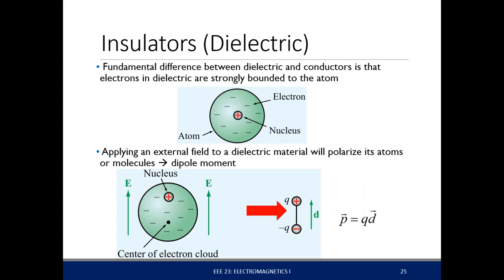The general structure of an atom is spherical. The nucleus is at the middle and electrons orbit that nucleus. But if you apply an electric field, the center of the electrons moves to a certain point and the nucleus moves away — the nucleus moves in the direction of the electric field and the electrons move toward the source of the electric field.